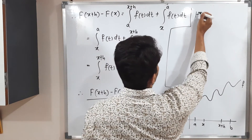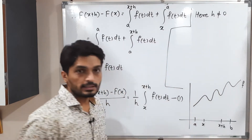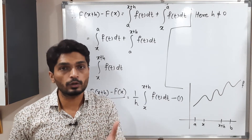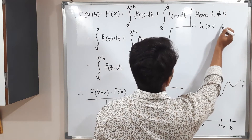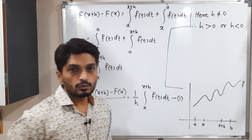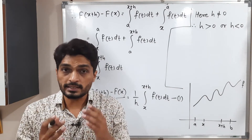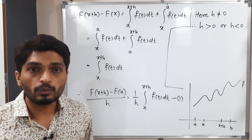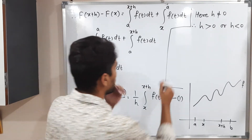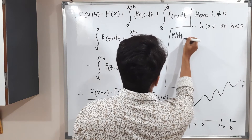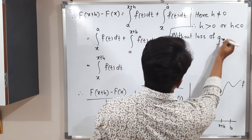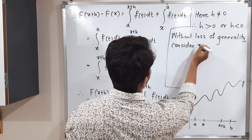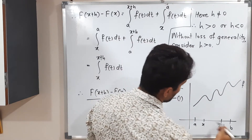Since h ≠ 0, it is either positive or negative. Without loss of generality, we assume h > 0. The case h < 0 can be proven by the same technique.